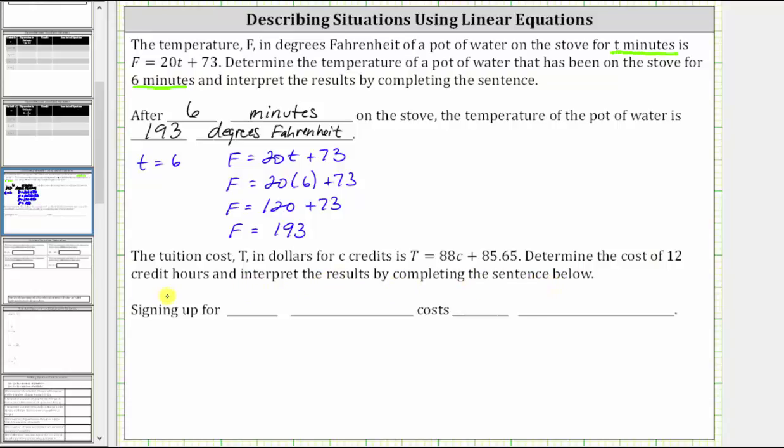Because we're asked to determine the cost of 12 credit hours and C is the number of credits, we know that C equals 12.